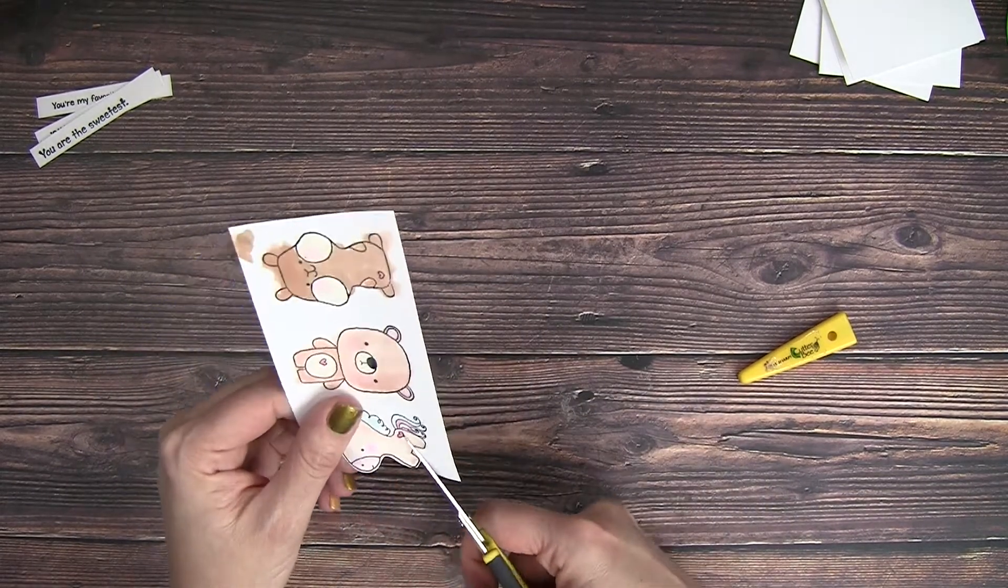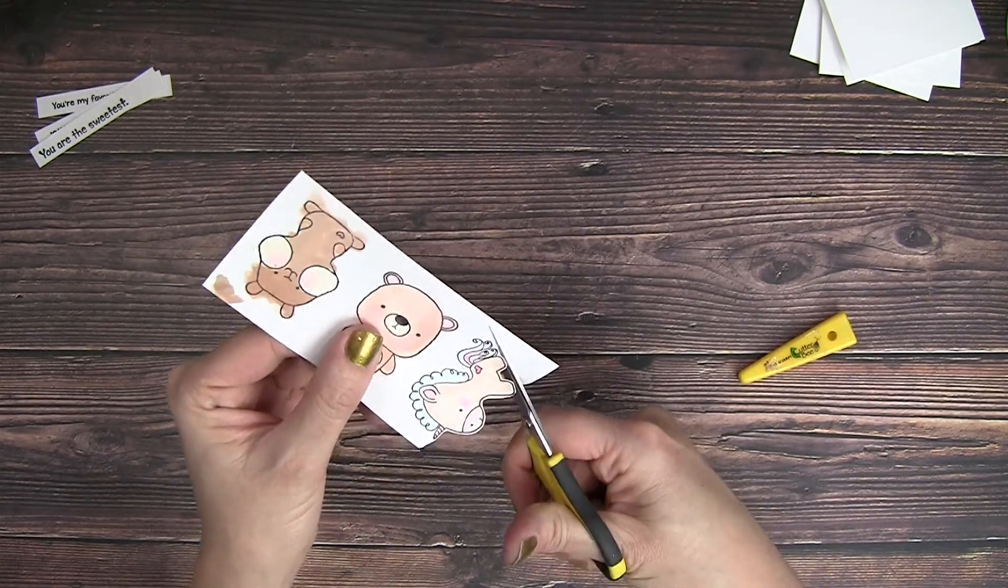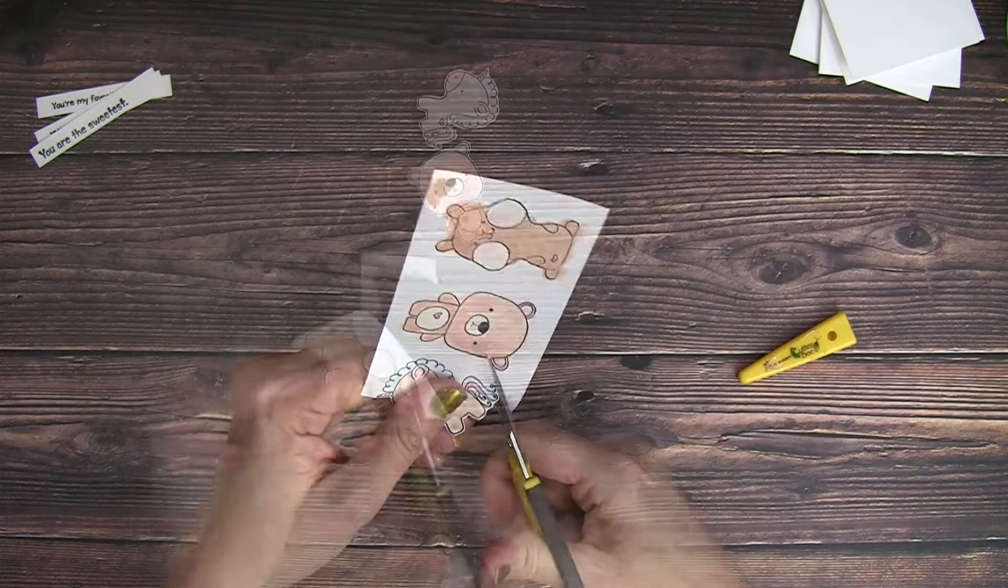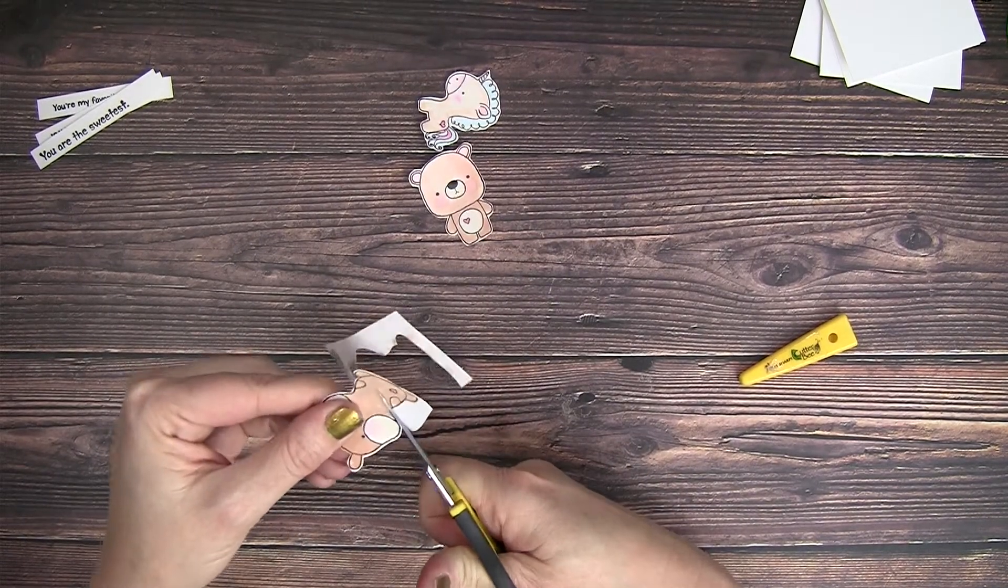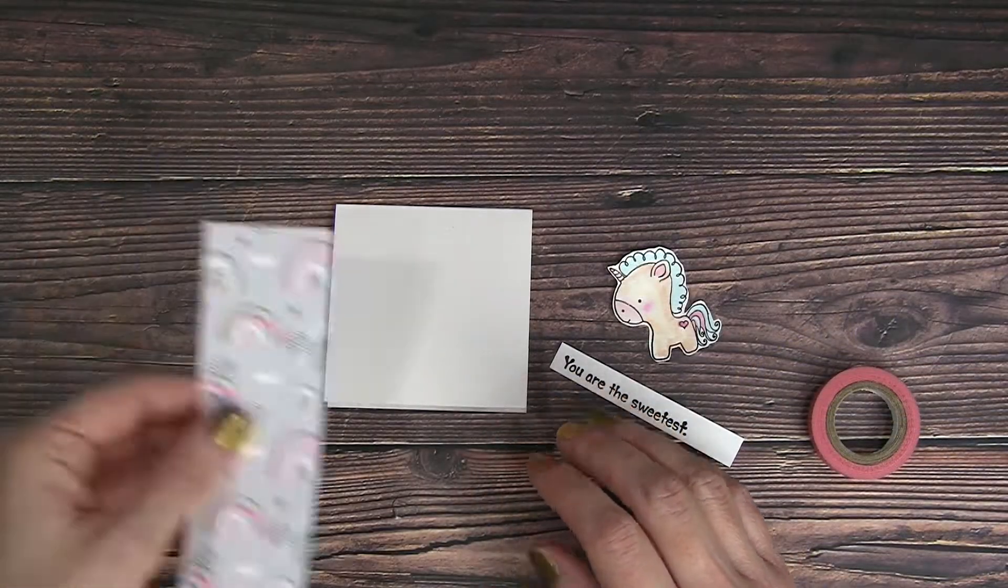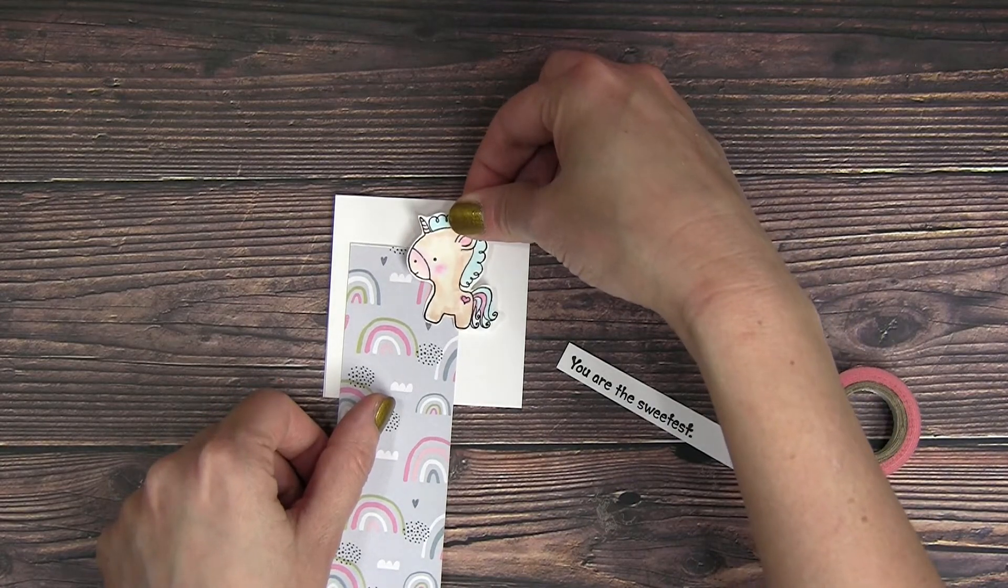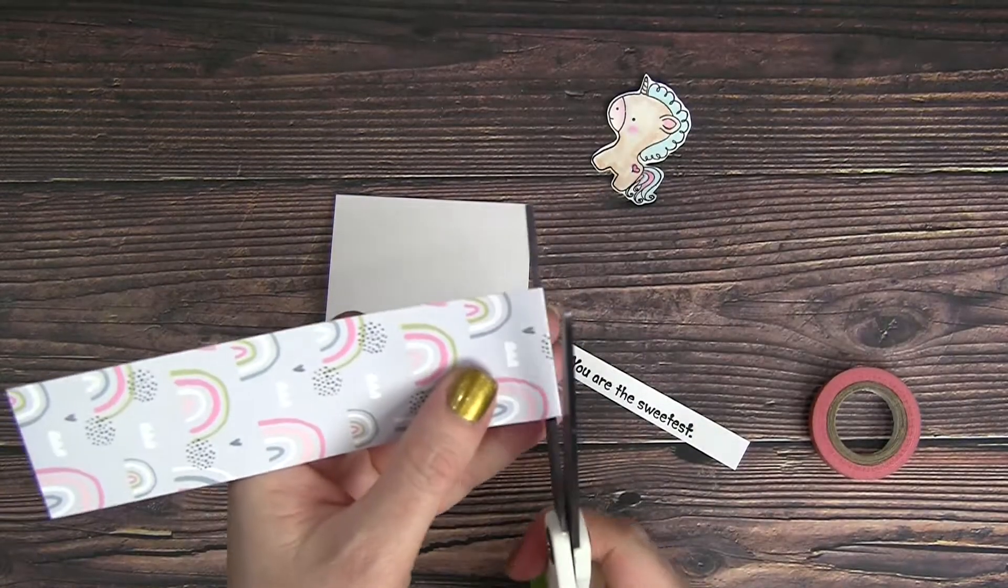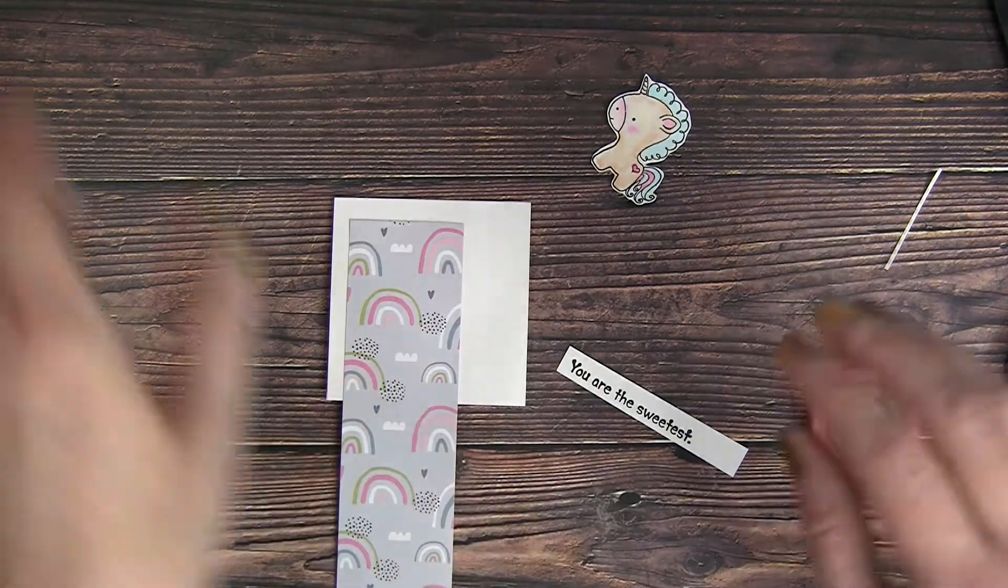Now I'm just going to fussy cut these out. There are some digital die cut files from Unity for these that you could use, or your brother scan and cut, any way that you want to fussy cut these out. I just like to have a little border around each image - it just makes fussy cutting easier and I don't know, the border just makes me happy.